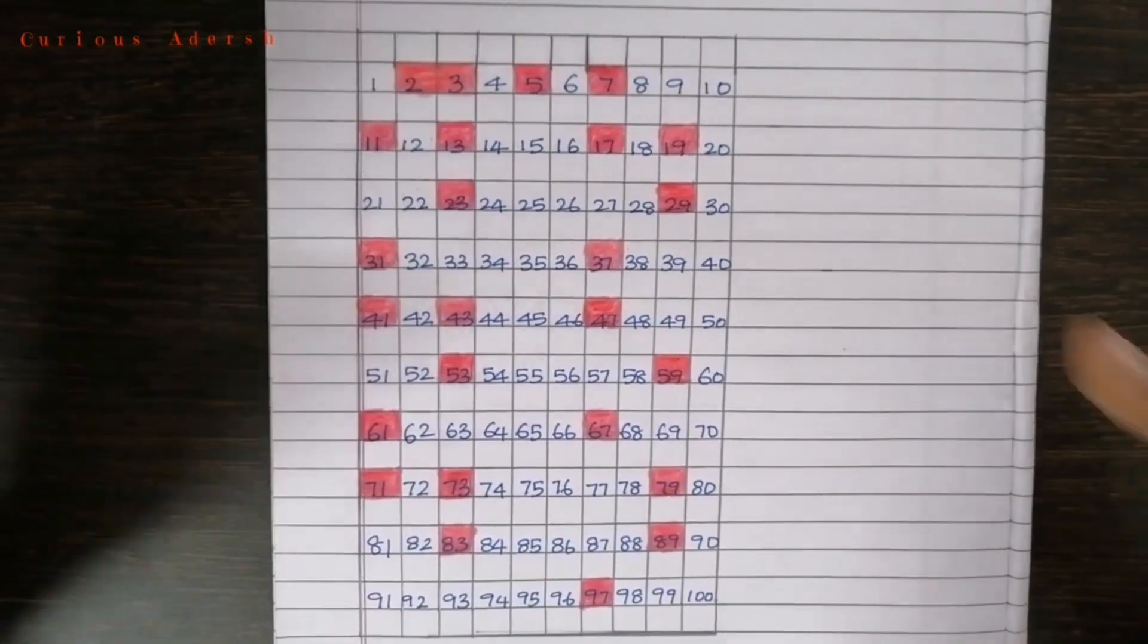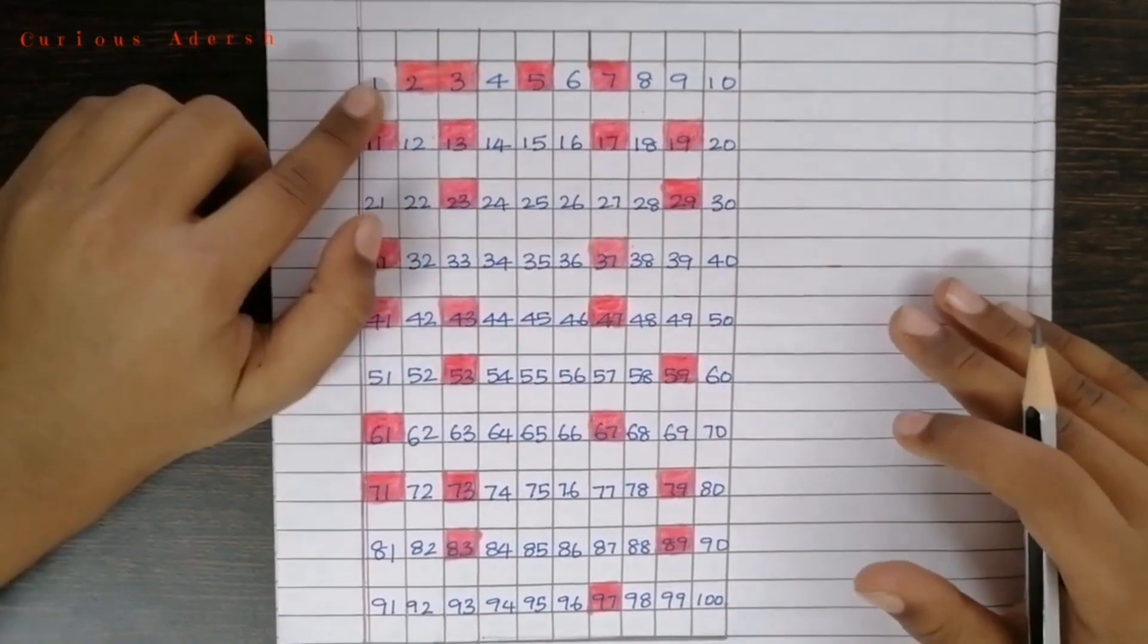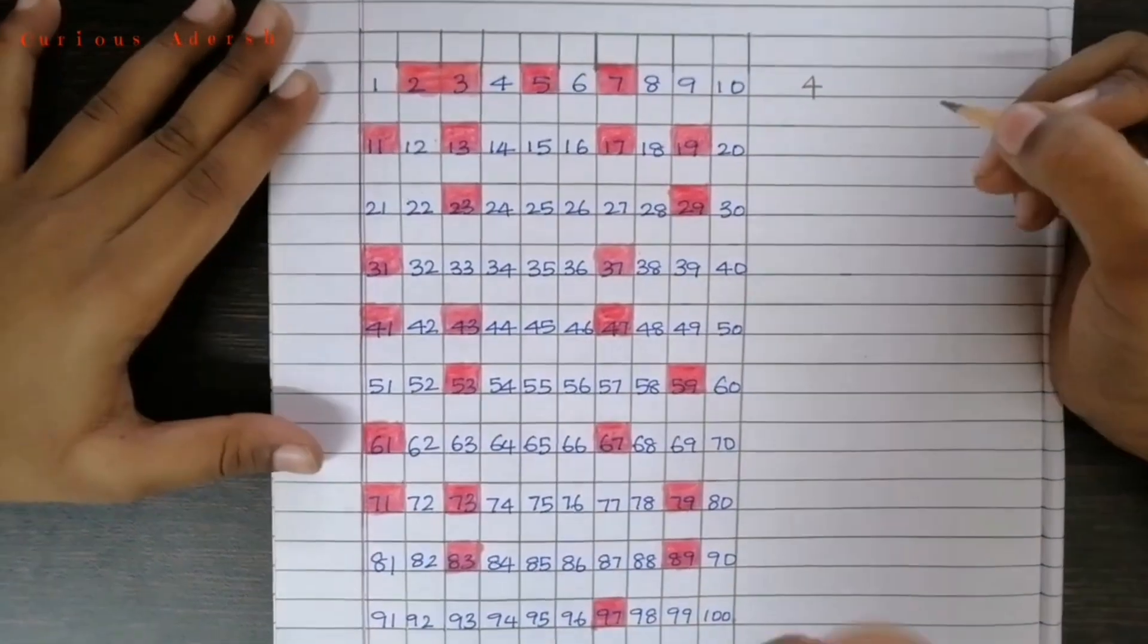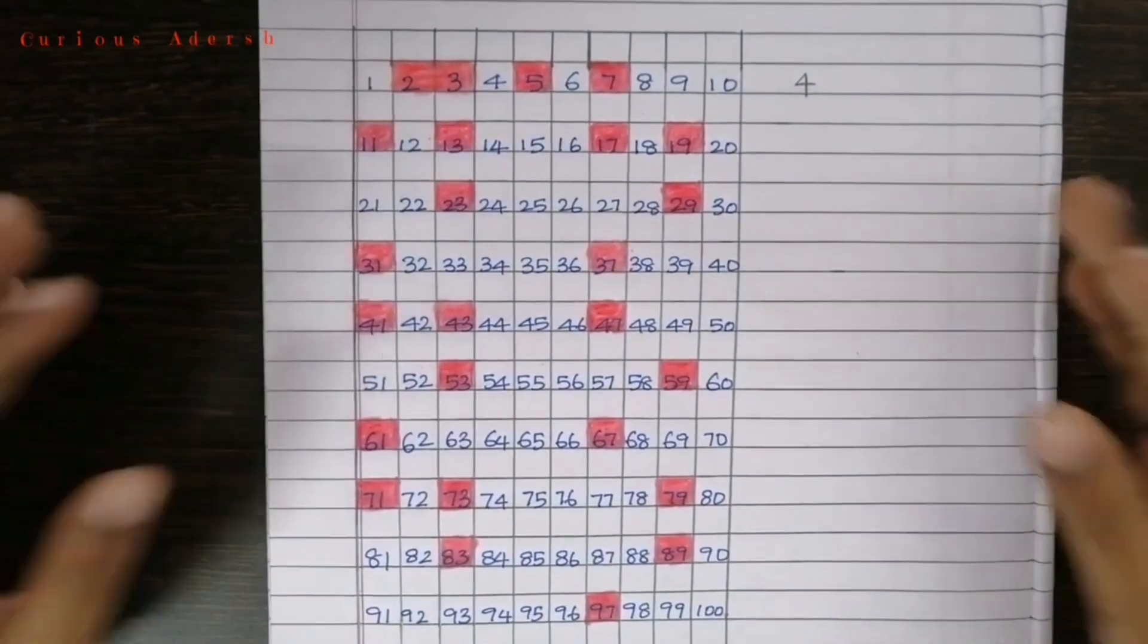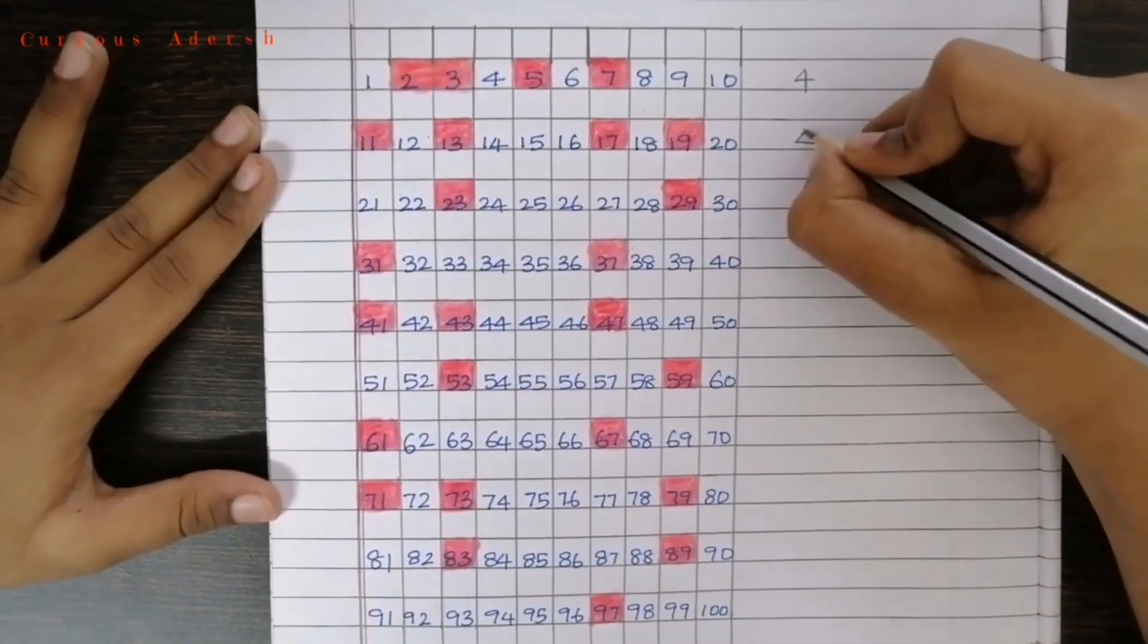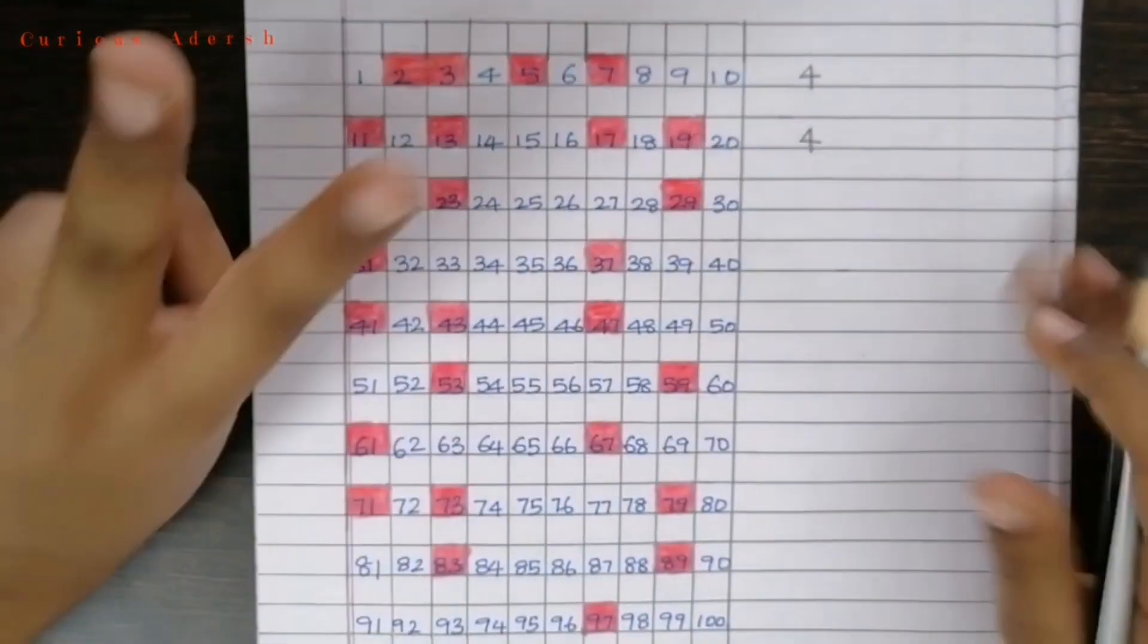Now, let's write the secret code. How many prime numbers are there from 1 to 10? 4. How many numbers are there from 11 to 20? 4. How many prime numbers are there from 21 to 30? 2.